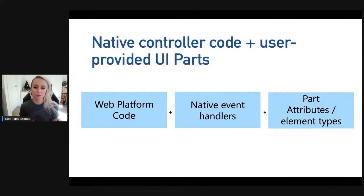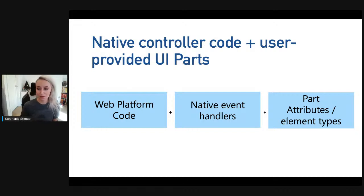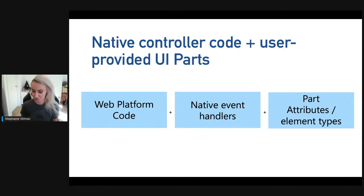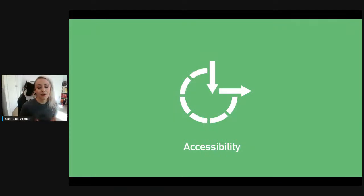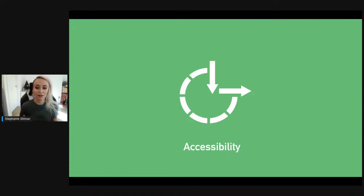By adding the part attribute to your code, you signal to the web platform that it has code to wire up to your control. The platform will apply native event handlers where applicable to handle user input, meaning developers can make UI tweaks without writing tons of JavaScript. The platform will also apply the correct accessibility semantics to your controls automatically when you apply those parts — letting the platform do what it's meant to do and providing accessibility out of the box.